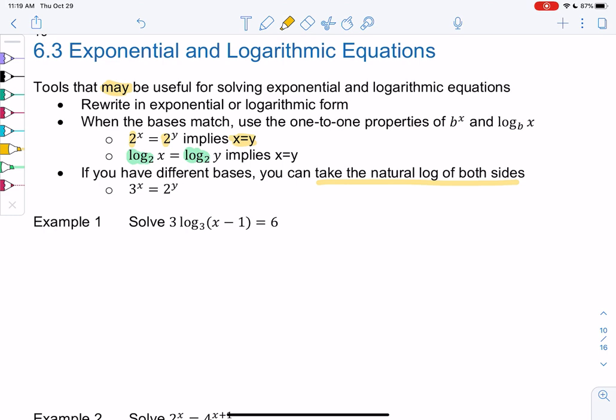So example one let's solve 3 log₃(x - 1) = 6. So what I'm going to do first is I'm going to isolate the log so we're going to divide by 3 to isolate the log, get rid of that coefficient of 3. So we get log₃(x - 1) = 2.